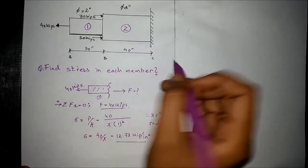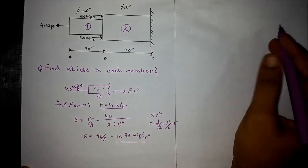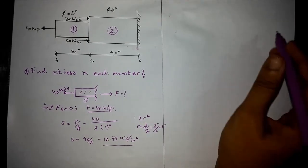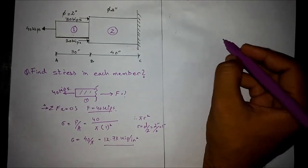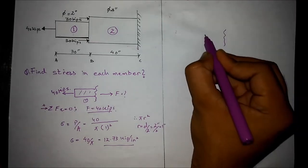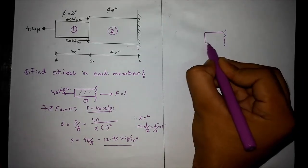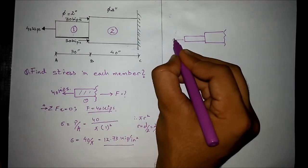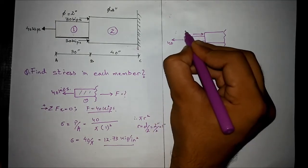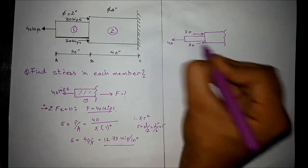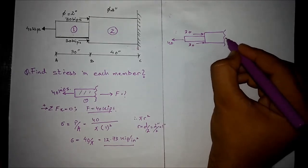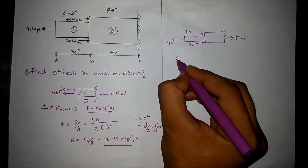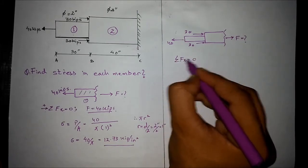Now for member number 2, we draw the free body diagram in the similar manner as we drew for member 1. We apply the same equation of equilibrium: sum of forces in the x direction equals zero.